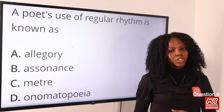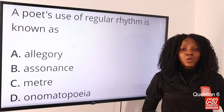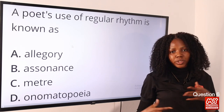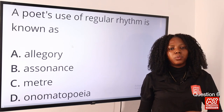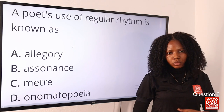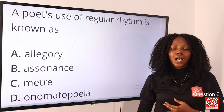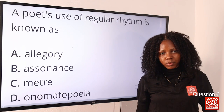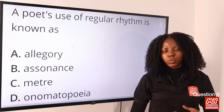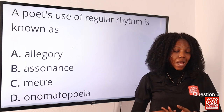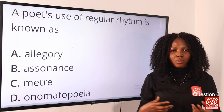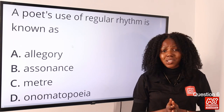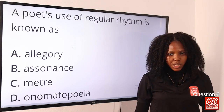Question 6: The use of regular rhythm is known as — when we talk about structural or regular rhythm, we are referring to meter. Meter has to do with regular rhythm in poems; the most famous type is iambic meter. So the answer to this question is option C, meter.